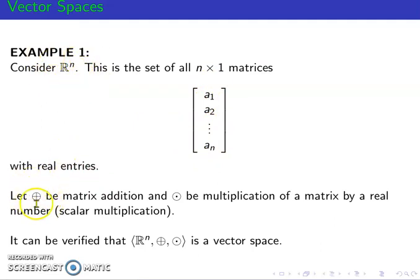Let vector addition be a matrix addition. And scalar multiplication be a multiplication of matrix by a real number. In this case, we have the scalar multiplication. It can be verified that r to the n together with vector addition and scalar multiplication defined in this way is a vector space.